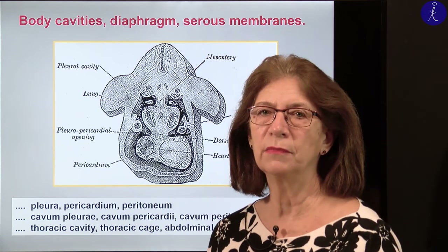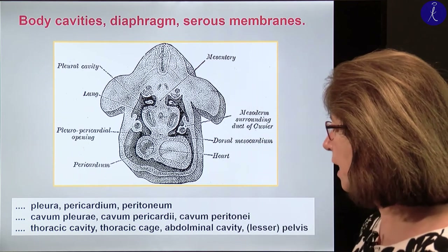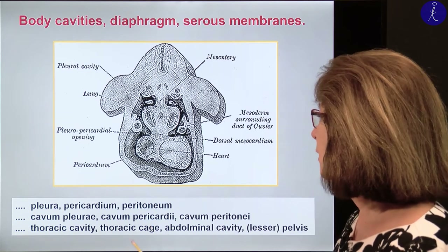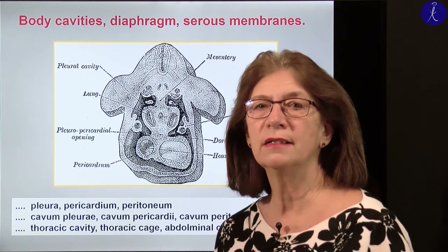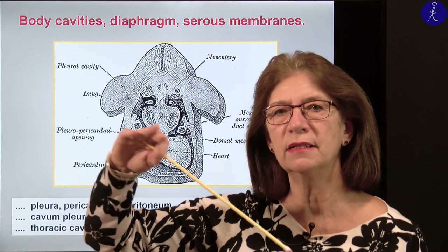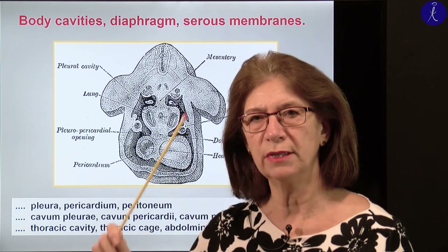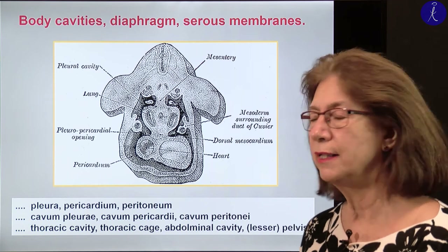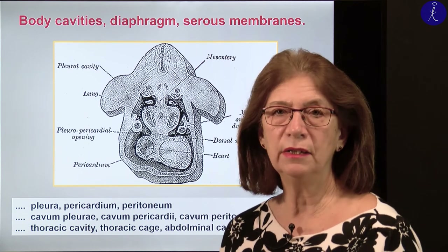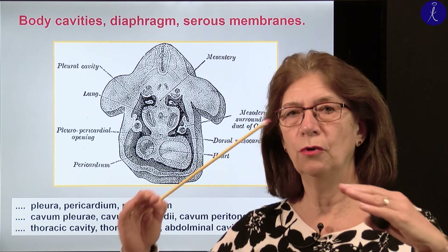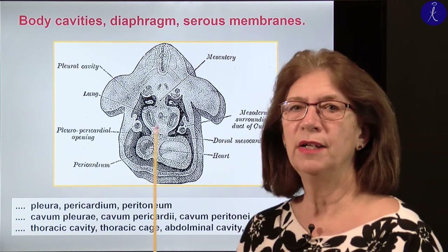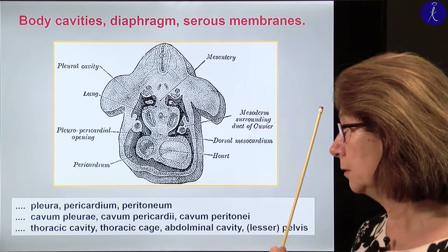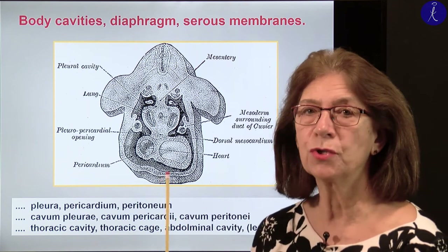Please be aware that we have to make a difference between the thoracic cavity and the thoracic cage. The thoracic cavity is the territory above the diaphragm, and it exceeds the level of the first ribs by 2 cm. That's the cupula pleurae, and together this whole territory is the thoracic cavity. The highest point of the diaphragm reflects to the anterior body wall at the level of the fifth rib, so it's much higher than you usually think.